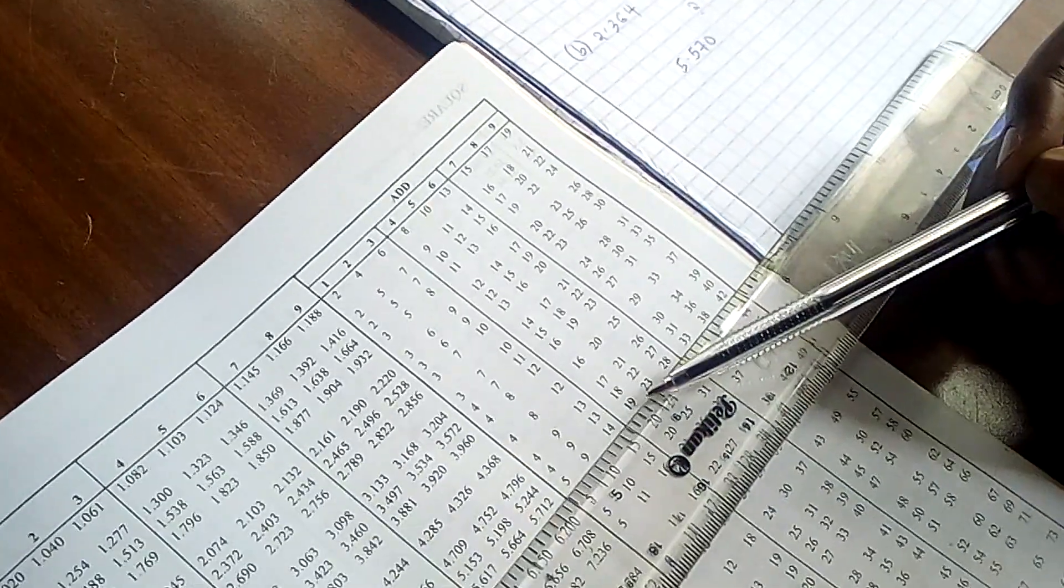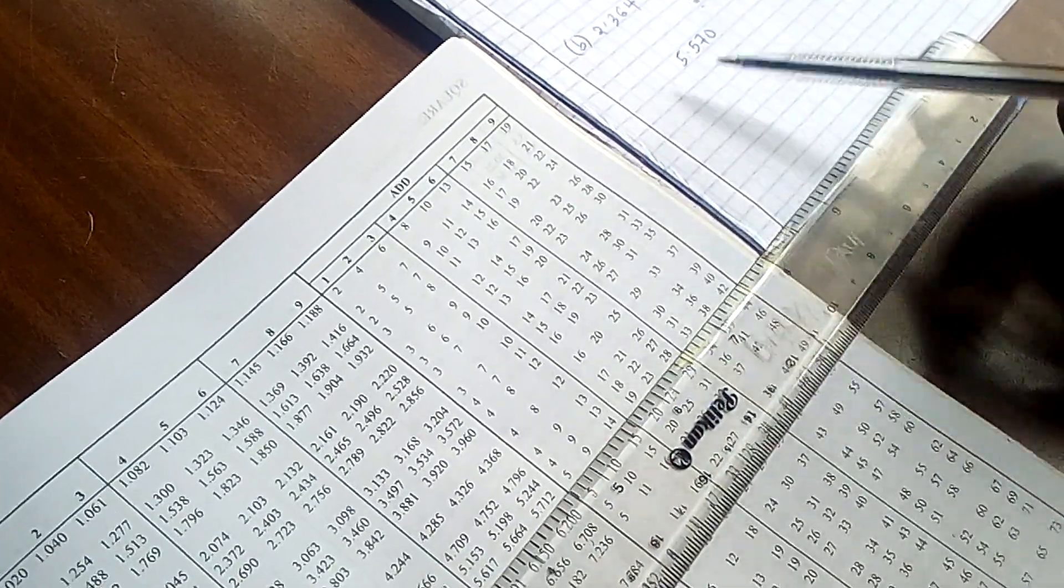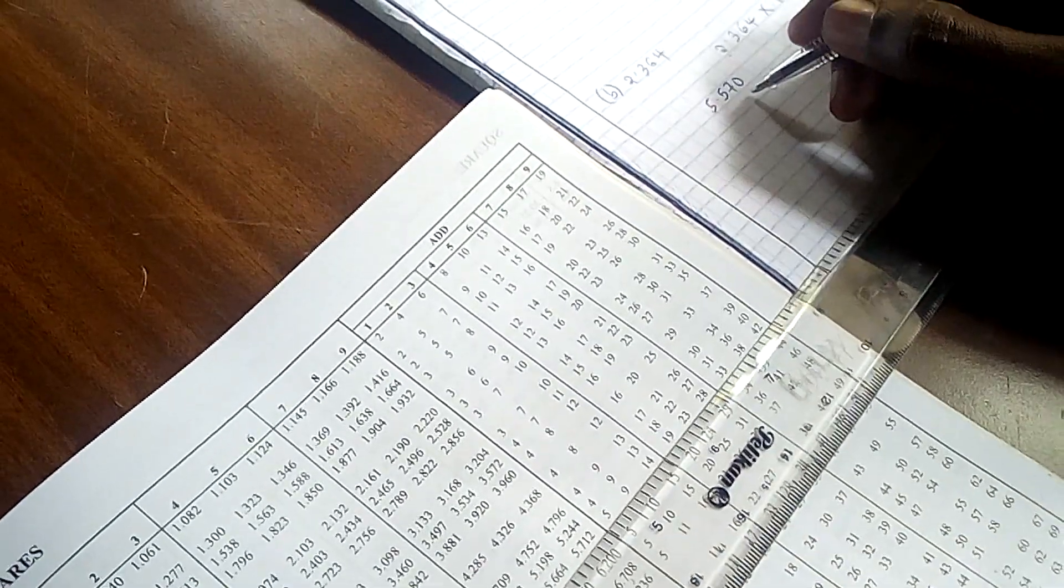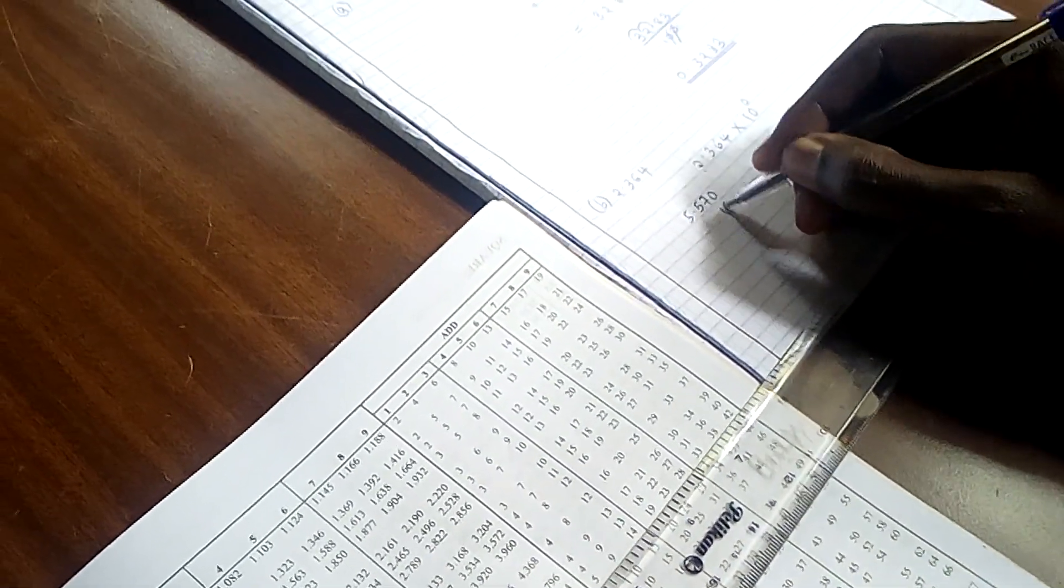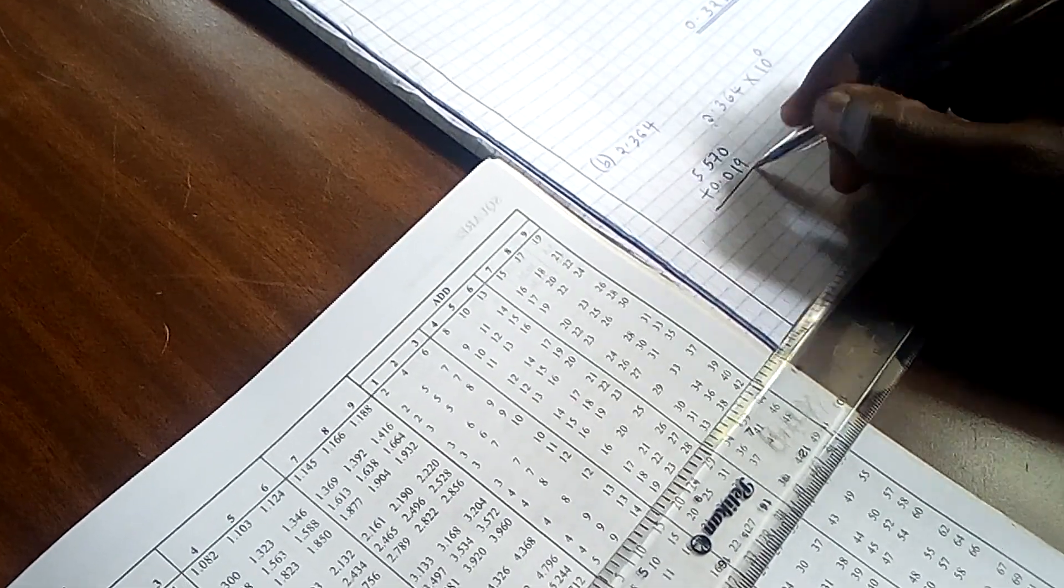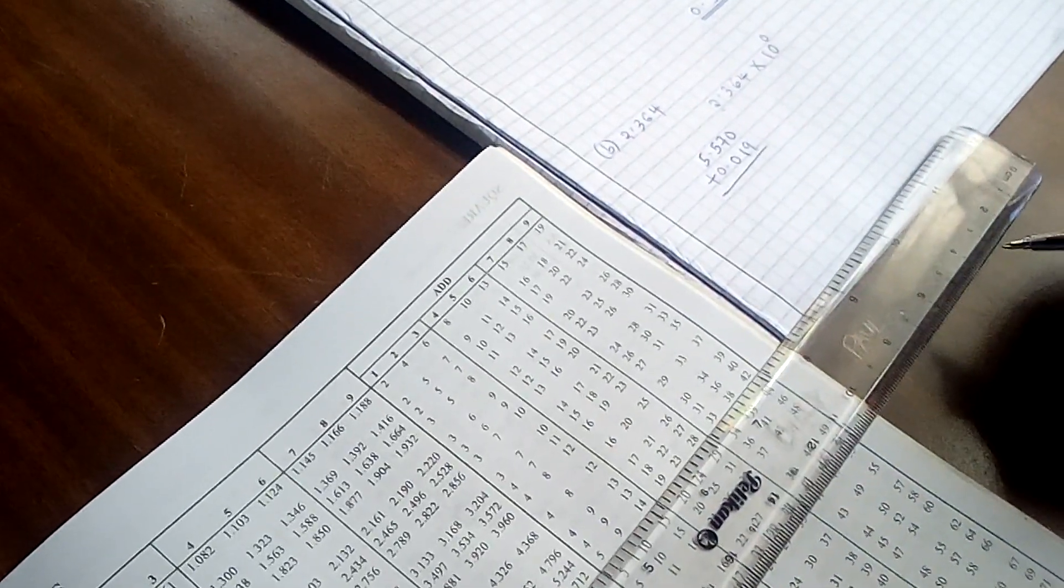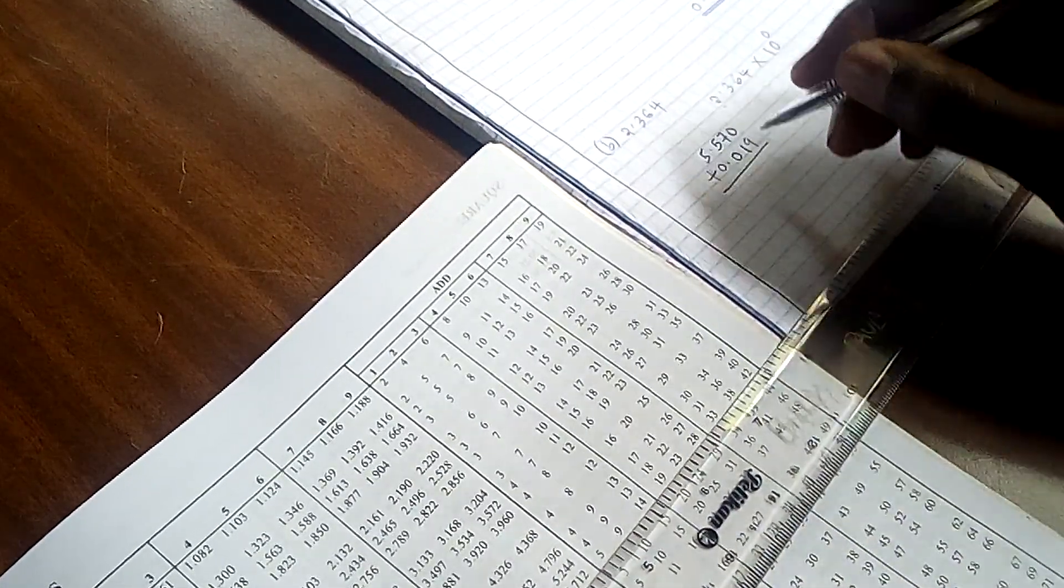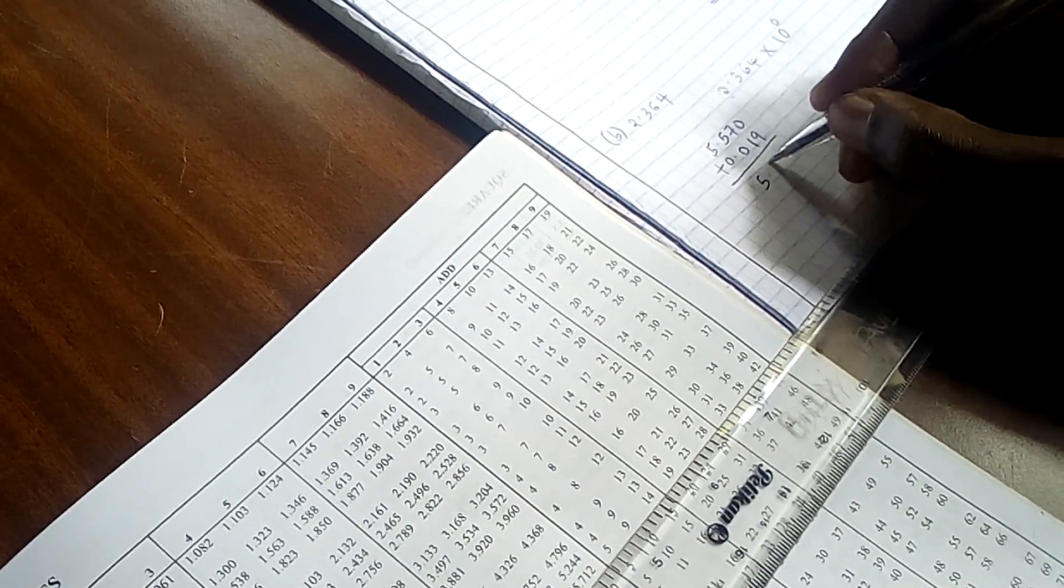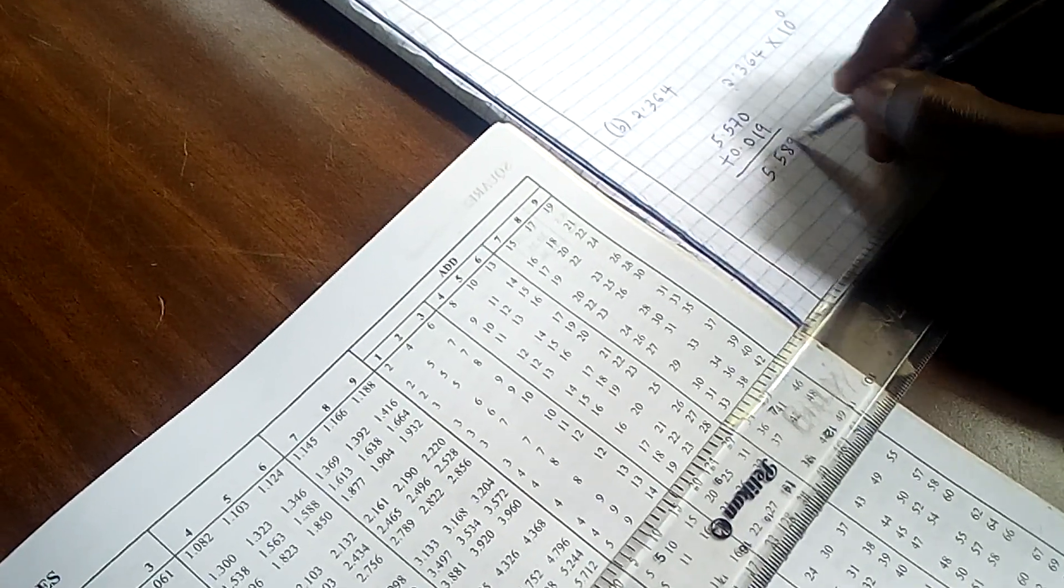And it is not a whole number this 19. So don't add it here. Add it at the far end here. So these ones can be zeros. So if you add that 0.019 to 5.570 you get 5.589. So basically this becomes the square of this particular number.